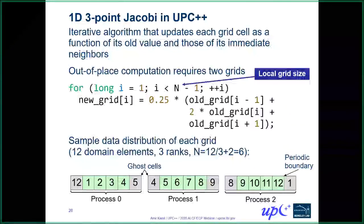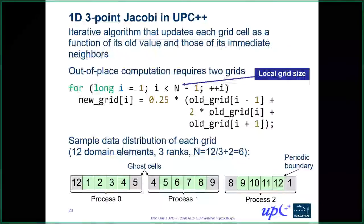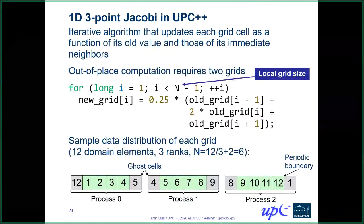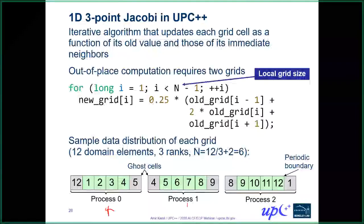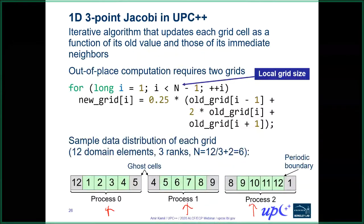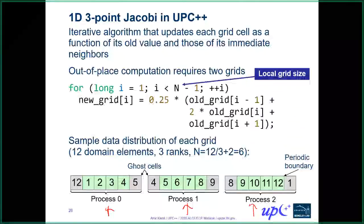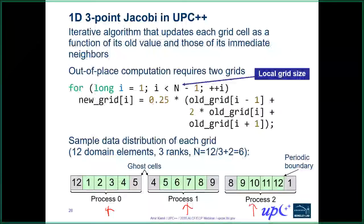Let's look at a micro-benchmark for examining further UPC++ features: a 1D three-point Jacobi in UPC++. This is a one-dimensional nearest-neighbor computation. We have a global data domain — in this case 12 elements — divided among three processors, so four elements per process. In terms of data representation, we will also have ghost cells on the boundaries.